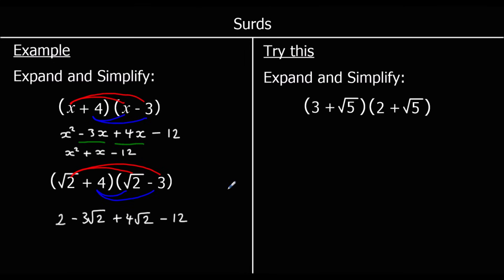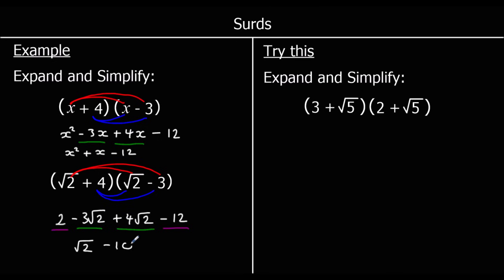Now we're collecting the like terms. We've got two root 2 terms, but this time we've also got two numbers by themselves which we can simplify. For the root 2 terms: negative 3 root 2 plus 4 root 2. Negative 3 plus 4 is 1, so I've got 1 root 2, which I just write as root 2. For the numbers, I've got positive 2 take away 12. 2 take away 12 is negative 10. So I've got root 2 take away 10. And that's the answer.